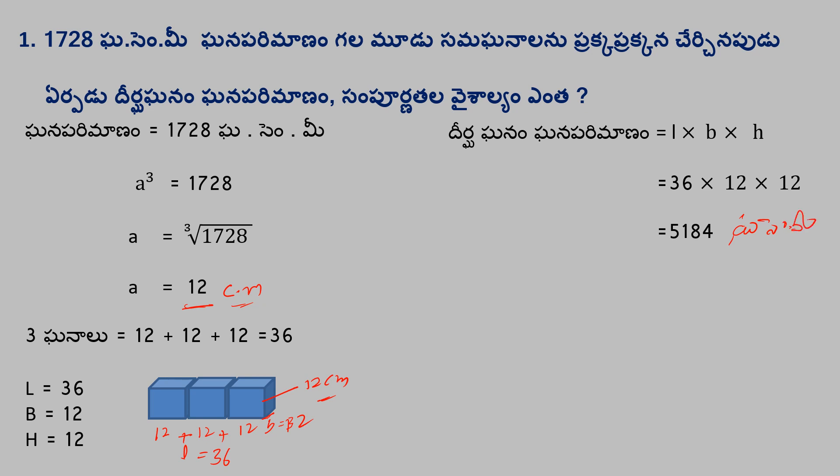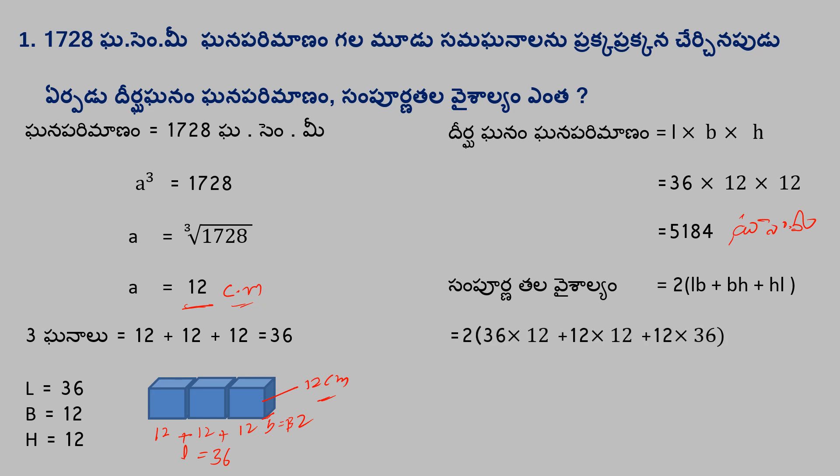Next, the surface area formula is 2(LB + BH + HL). Substituting: 2 into (36×12 + 12×12 + 12×36) = 2 into (432 + 144 + 432).